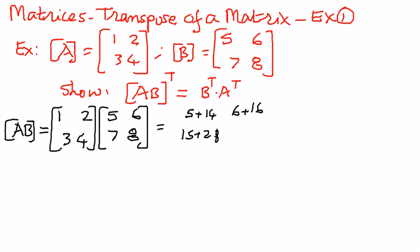Then 3 times 6 is 18, and then 4 times 8 is 32. When we simplify this some more, we get 5 plus 14 is 19. 6 plus 16 is 22. 15 plus 28 is 43, and 18 plus 32 is 50.